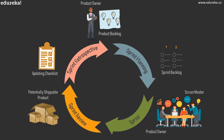After the sprint retrospective, the cycle begins again. Remaining items in the product backlog are brought into the next sprint backlog, the Scrum Master boosts team morale, another product increment is delivered, and then another sprint retrospective follows. This cycle repeats until the deadline is reached, the budget is exhausted, or the Product Owner is satisfied with the final product — whichever comes first.